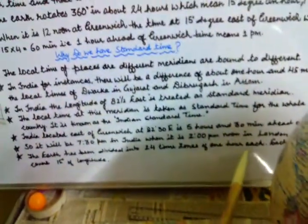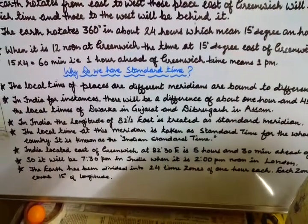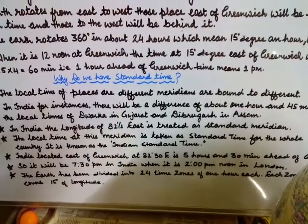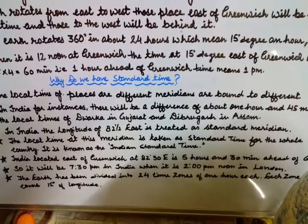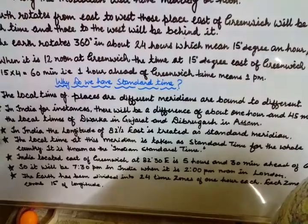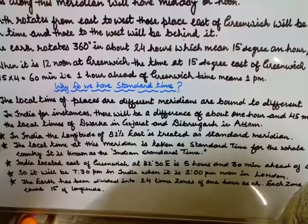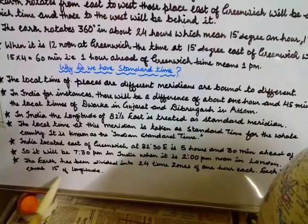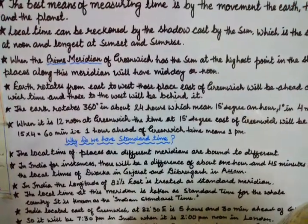The earth has been divided into 24 time zones of 1 hour each. Each zone thus covers 15 degrees of longitude. In 1 hour, our earth covers 15 degrees of longitude — and so there are 24 such zones covering the full 360 degrees.